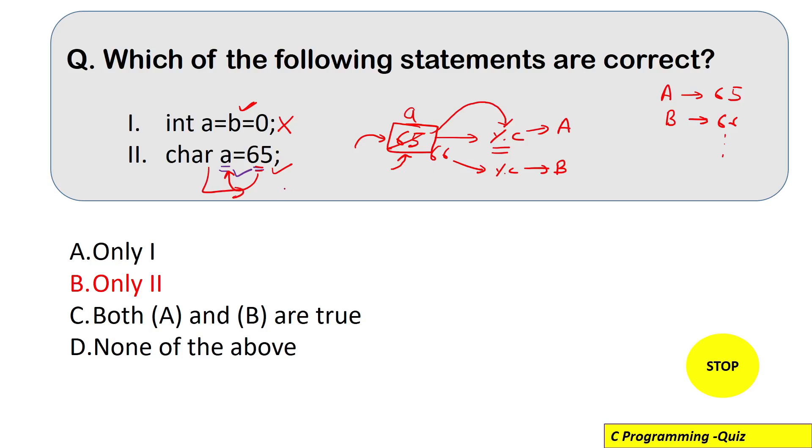And after this if you print the answer of this a using percent D then you will simply get 65 or if it is here 66 then you will get 66 only. So this character and the integer value that is ASCII value they are like interchangeable to each other.